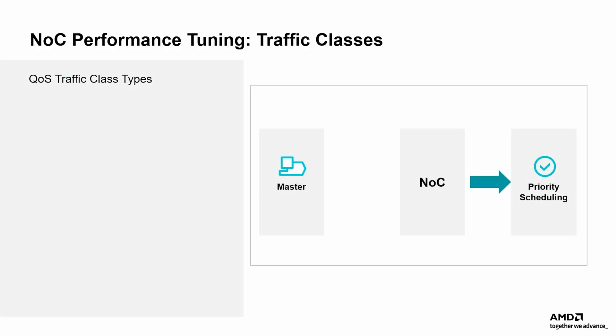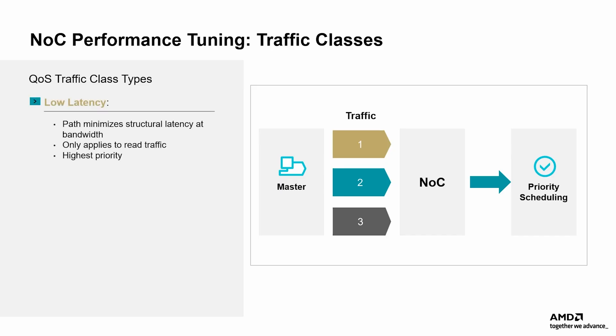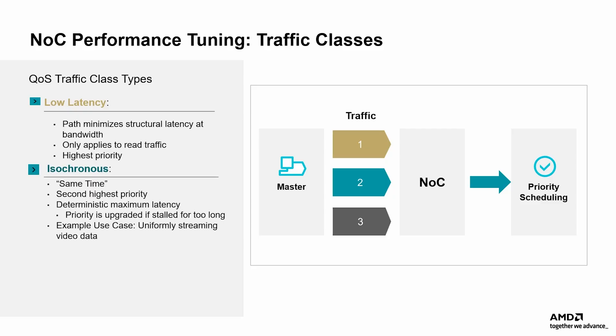The AMD Versal NOC supports three traffic classes, each designed for specific use cases. Low latency offers the highest priority for read traffic and minimizes structural delays, making it ideal for real-time control paths. Isochronous guarantees a deterministic maximum latency, which is essential for streaming video or audio data that must arrive at precise intervals. Best effort is the lowest priority class and serves as the default for background transfers or non-critical tasks. Correctly classifying traffic ensures that real-time data is not delayed or disrupted by bulk transfers, maintaining predictable system performance.